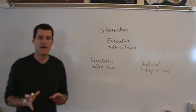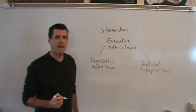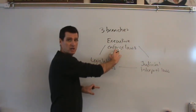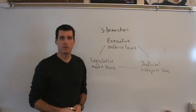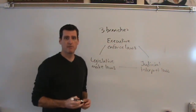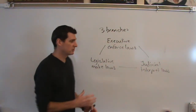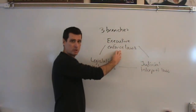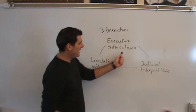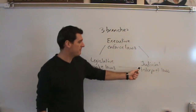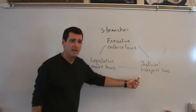Between those three, you have all the different powers that a government can enact. Each one can check a power of the other — if one branch tries to do something, other branches have ways of stopping it. They also have ways of balancing power between all three, so none of the branches has too much power. The legislature makes laws, enforced by the executive branch, and that enforcement is interpreted by the court system, which decides what the laws really mean.